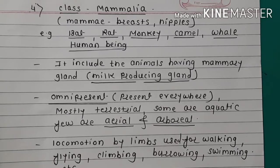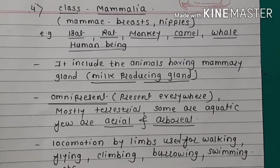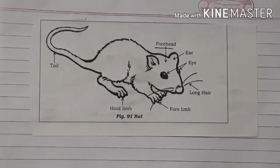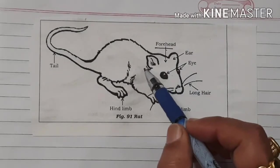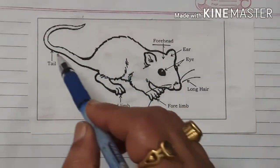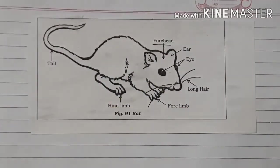Locomotion by forelimbs, used for walking, flying, climbing, burrowing, swimming, etc. Body is divided into head, neck, trunk, and tail.